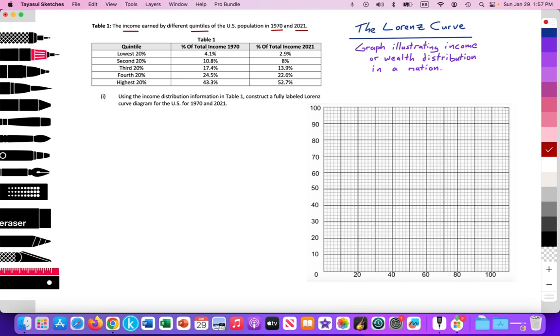We can already see by looking at the data in terms of the percent of total income in 1970, it was 4.1. 2021, that group has fallen to 2.9. So income distribution is getting worse for that quintile. We can see that's the case for all quintiles. The second 20%, it fell from 10.8 to 8%. Also income distribution getting worse. The next 20%, 17.4 to 13.9, getting worse yet again for the middle class. The highest, the fourth highest quintile, 24.5, falling to 22.6. So in all cases, we see for the lowest, second lowest, third, and fourth quintiles, income distribution has worsened over a 40-year period.